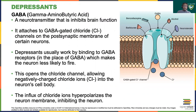GABA tells a neuron to stop firing by allowing the entry of chloride ions into the postsynaptic neuron. Recalling the action potential diagram from chapter three, hyperpolarization is when the cell membrane becomes more negative, which decreases the likelihood of new action potentials firing. So the entry of chloride ions decreases the membrane charge and the neuron becomes inhibited. Alcohol works by doing the same thing as GABA — it attaches to these receptors so that neurons become inhibited.